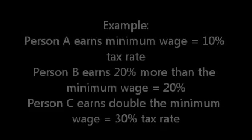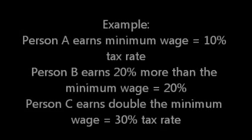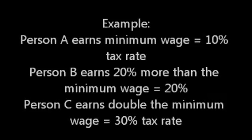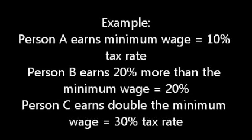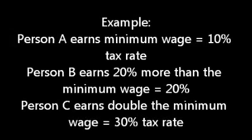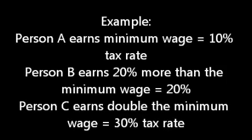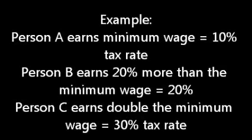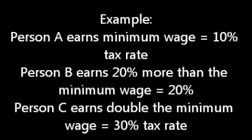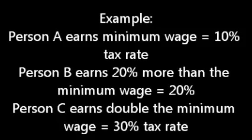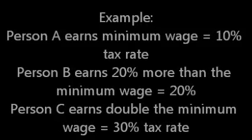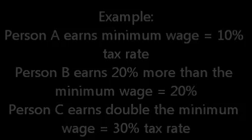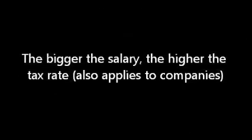An example of a marginal taxing system is as follows: Person A earning a minimum wage should have to pay a tax of 10%, while Person B earning 20% more than the minimum wage should have to pay 15%. A person earning double the minimum wage should have to pay 30%. So as a person's salary increases, the tax percentage they have to pay will also increase. This also applies to companies.